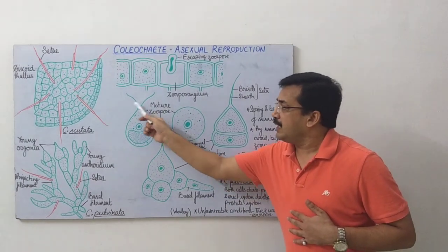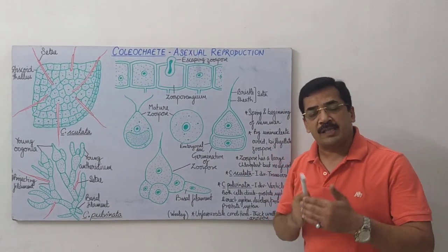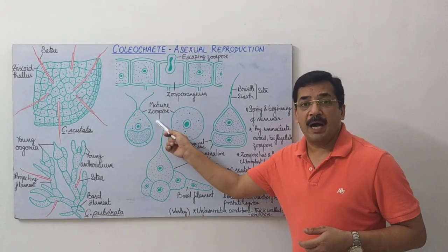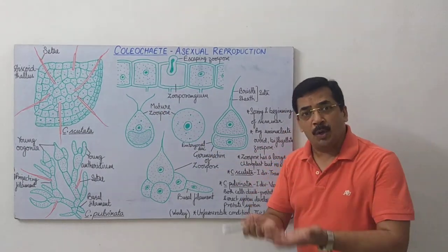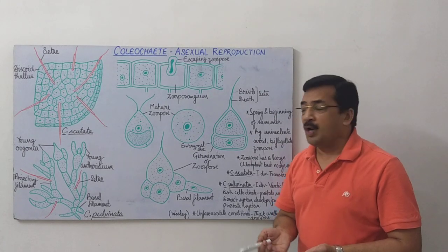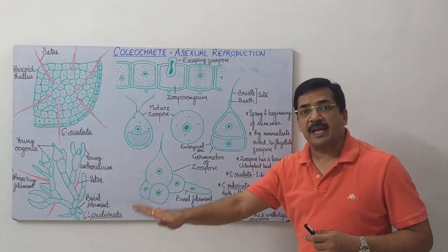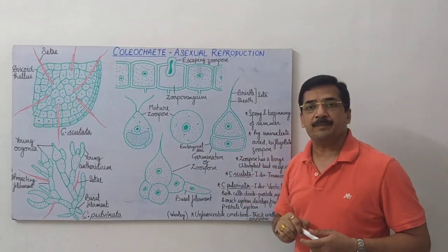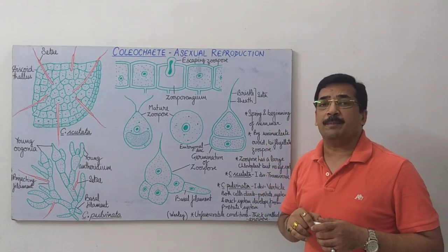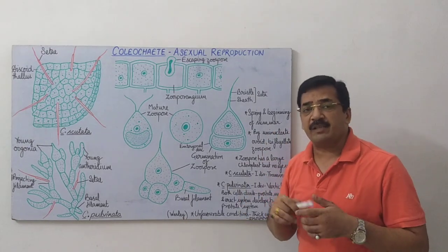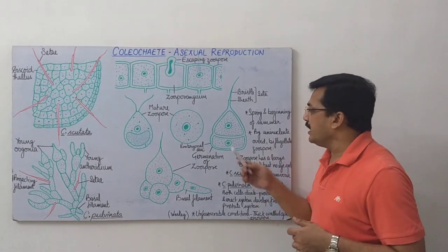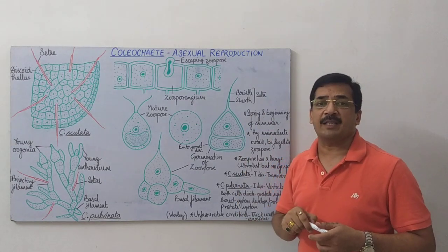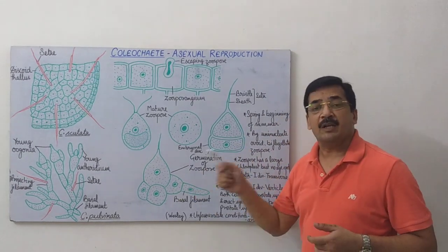Release hone ke baad yeh biflagellate ovoid zoospore kuch samay tak paani mein tairta rehta hai. Kuch samay tairne ke baad yeh apne flagella chhod deta hai, aur kisi substrate par jakar settle ho jata hai, aur apne chaaro taraf ek wall ka secretion kar deta hai. Is spore mein germination ki process jab start hoti hai, toh pehla division transverse bhi ho sakta hai aur vertical bhi, yeh depend karta hai ki species kaun si hai.